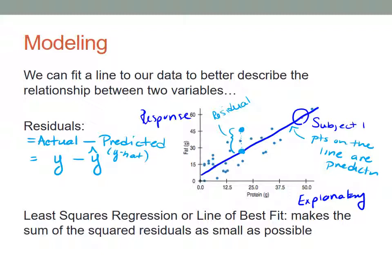Least squares regression or the line of best fit is a specific line that makes the sum of the squared residuals as small as possible.